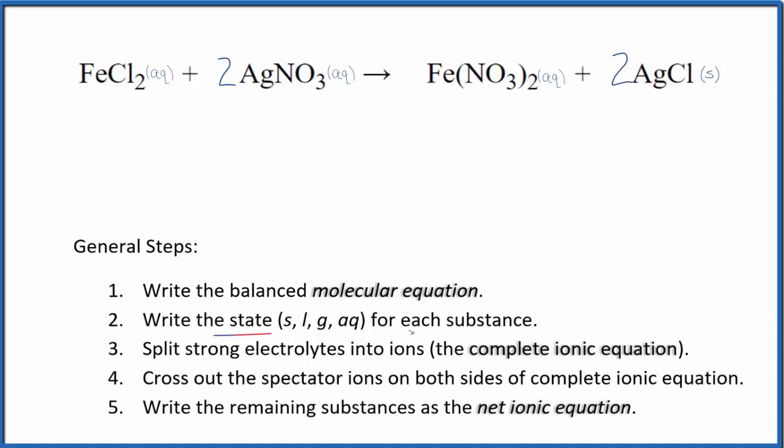Next, we write the state for each substance. Everything is aqueous. Chlorides are very soluble most of the time. Nitrates are very soluble here. The silver chloride, though, this is an exception to the rule that chlorides are soluble, so this is going to be insoluble. When you mix these two substances, you form this precipitate here. This solid goes to the bottom of the test tube as a precipitate. These are the states for our net ionic equation.